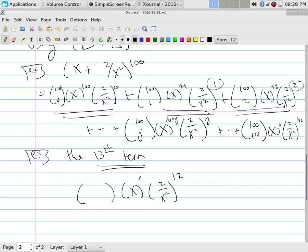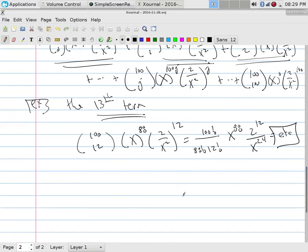Now the sum of these two, this will be 100 minus 12, which is going to be 88, and so this would be 100 choose 12, and you could simplify it and you would get things like, this is 100 factorial over 88 factorial 12 factorial x to the 88th power and 2 to the 12th power divided by x to the 24th power equals, do some simplification on this particular term until I get some particular formula for x.